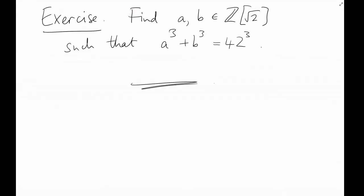I'll leave you with an exercise. By arguing in the same way, and by using the final table I've linked below, find some elements a and b of Z adjoin root 2, such that a cubed plus b cubed equals 42 cubed.